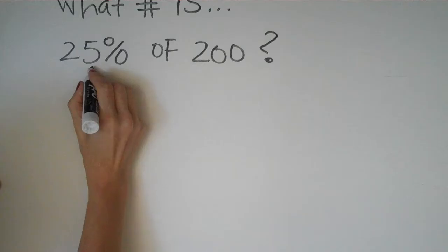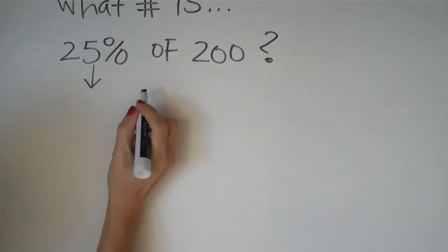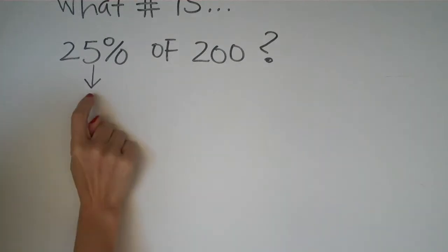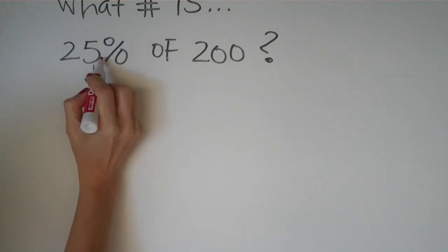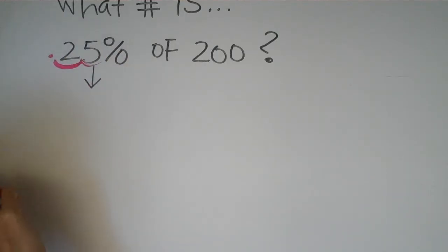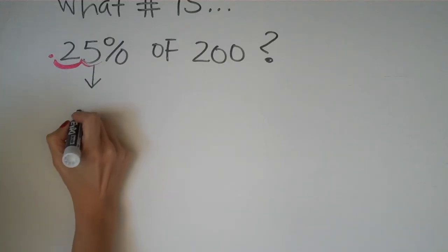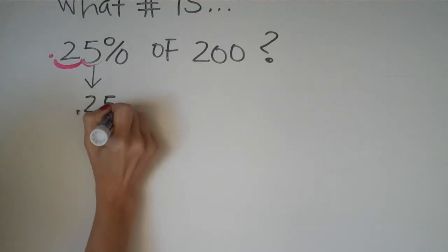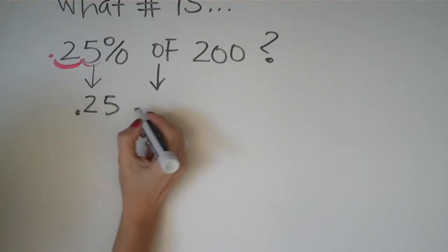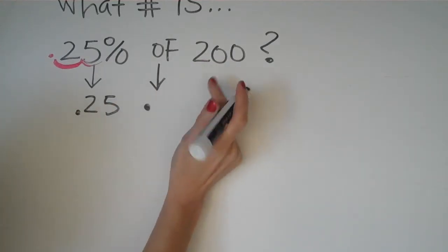So 25%, the first thing we need to do when finding a percent of a number is change that percent to a decimal. We move two places to the left, so this becomes 0.25. Now what does the word 'of' mean? Well, 'of' typically means multiply. So we have 0.25 of...